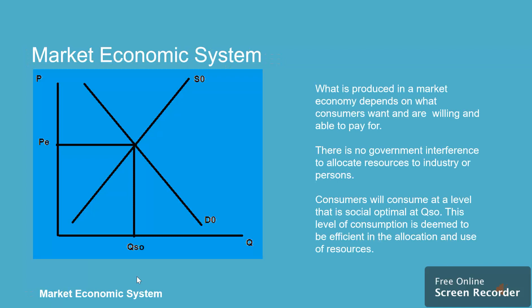What is produced in a market economy depends on what consumers want and are willing and able to pay for. There is no government interference to allocate resources to industry or persons. Consumers will consume at a level that is socially optimal — at QSO, this level of consumption is deemed to be efficient in the allocation and use of resources.